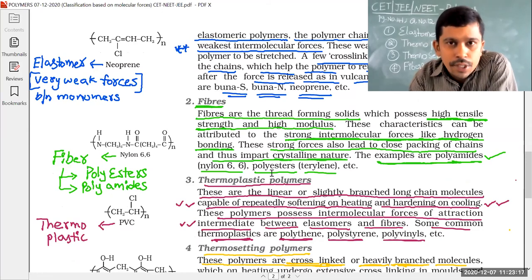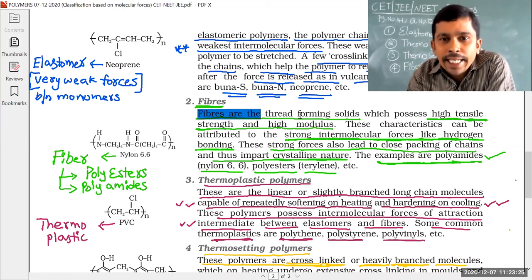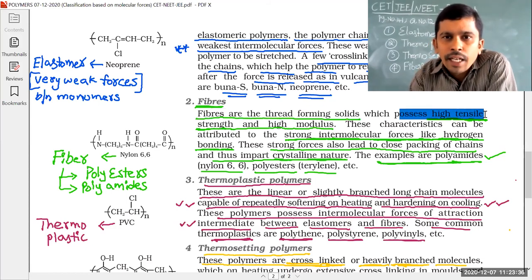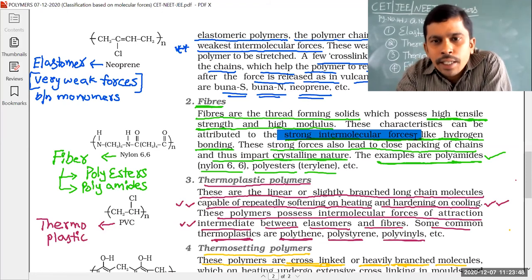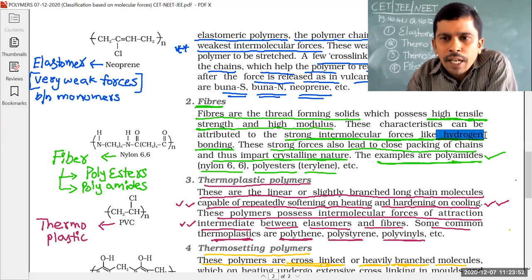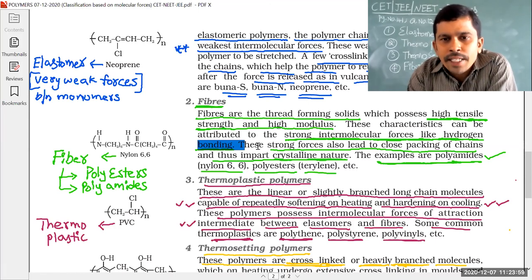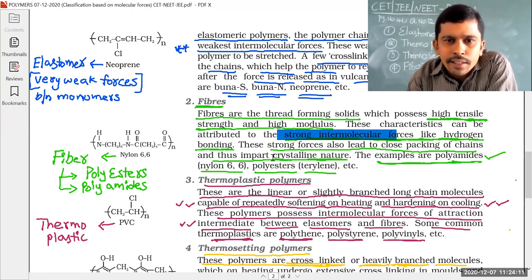The second polymer type is fibers — thread-like or thread-forming solids. Fibers have high tensile strength and high modulus. Between their monomer units, there are strong intermolecular forces of attraction, specifically hydrogen bonding. Therefore fibers are very strong in nature.